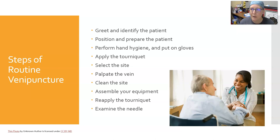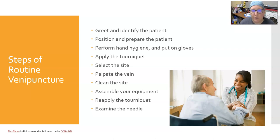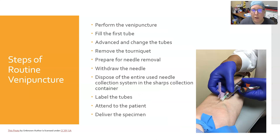I'm going to list the steps of routine venipuncture. We'll cover about half of them in this video and the other half in the next. The steps are: greet and identify the patient; position and prepare the patient; perform hand hygiene and put on gloves; apply the tourniquet; select the site; palpate the vein; clean the site; assemble the equipment; reapply the tourniquet if removed; examine the needle; perform the venipuncture; fill the first tube and advance and change tubes if needed; remove the tourniquet; prepare for needle removal; withdraw the needle; dispose of the entire used needle collection system in the sharps container; label your tubes; attend to the patient; and deliver the specimen to the lab.